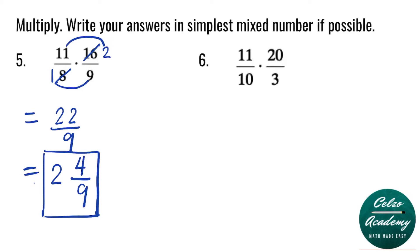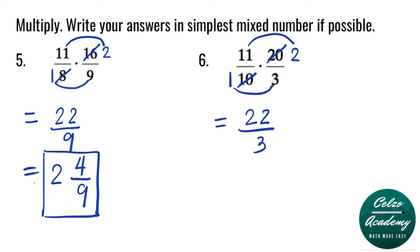Question 6: 11 over 10 times 20 over 3. We can simplify 20 divided by 10, which is 2 over 1. Now multiply the numerators 11 and 2 — that's 22 — and the denominators 1 and 3 — that is 3. Converting to a mixed number: how many 3s go into 22? 7 times — 7 times 3 is 21, remainder 1. The simplest answer for number 6 is 7 and 1 third.